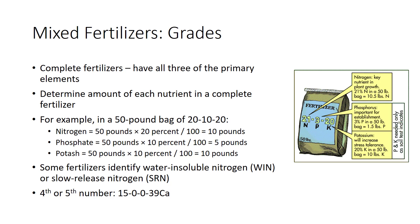For example, in a 50-pound bag of 20-10-20, the amount of nitrogen equals 10 pounds, 5 pounds of phosphate, and 10 pounds of potash, as seen in the calculations on the slide. Additional information may be found in the analysis, such as the percentage of nitrogen that is ammoniacal and the percentage that is nitrate.